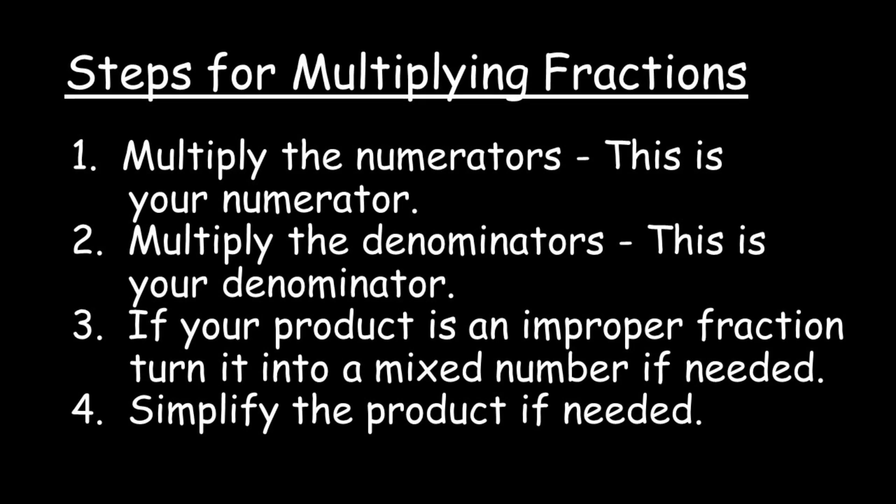Your first step is to multiply the numerators and the product will become your numerator. Then you'll multiply the denominators and this product will be your denominator. Now you need to turn any improper fractions into mixed numbers if that's the step you've been instructed to take, and you must always simplify if needed.